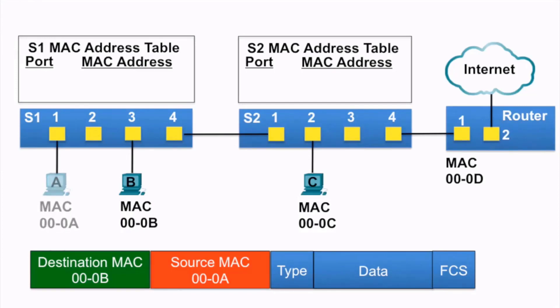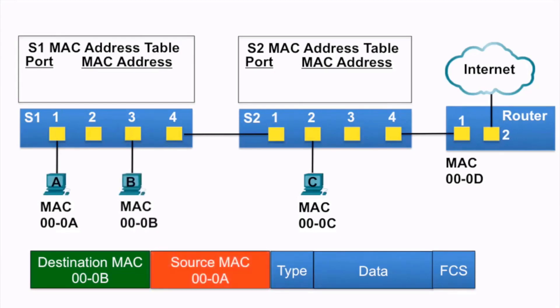PCA has an Ethernet frame to send to PCB. The source MAC address of the frame is 000A, and the destination MAC address is 000B. The Ethernet frame is sent to switch S1.